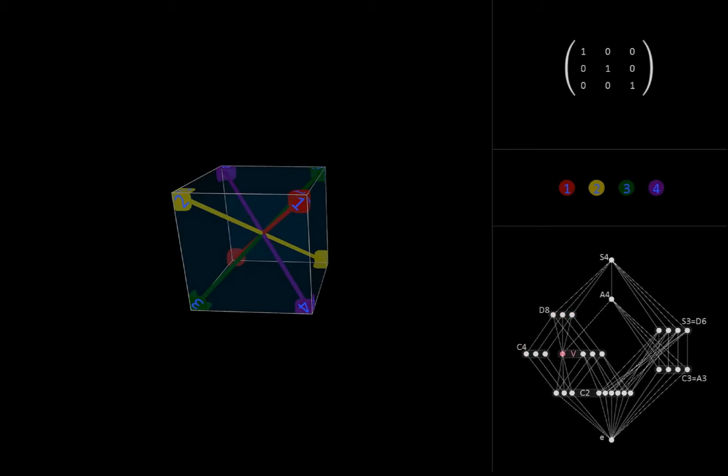Now let's take a look at the four Klein subgroups, denoted in the lattice diagram by V, which comes from their German name, Vierergruppe. Note that one of them is kind of special in that it's a subgroup of all three D8 groups and of the alternating subgroup A4. By contrast, each of the other three Kleins is a subgroup of only one particular D8 and is not a subgroup of A4. Let's see if we can find this special Klein and identify what makes it different from the others.